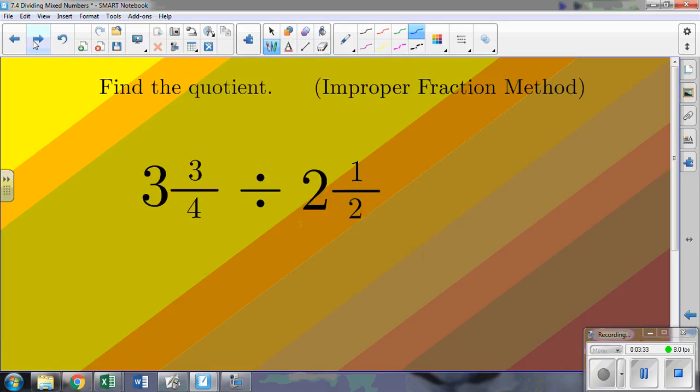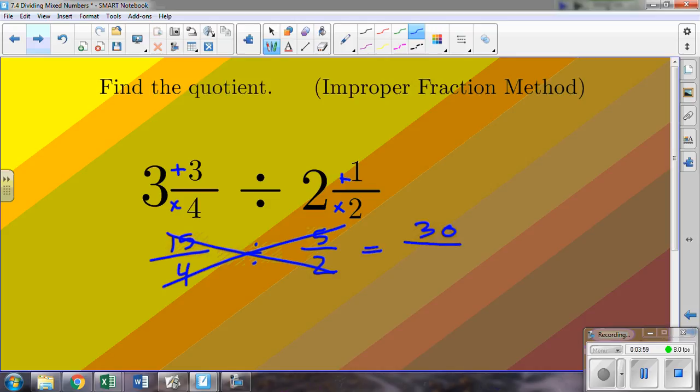3 and three fourths divided by 2 and a half. Multiply and add: 3 times 4 is 12, 12 plus 3 is 15. 15 over 4 divided by 5 halves. So 15 times 2 is 30, 4 times 5 is 20. And so here's our answer in improper fraction form, 30 over 20.